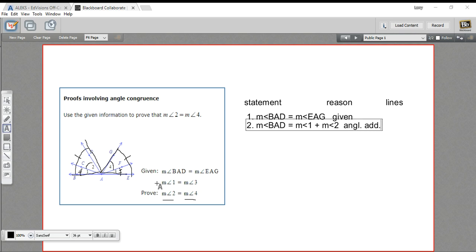All right, and we should do that for the other side as well. So the measure of ∠EAG is made up of the measure of angle 3 plus the measure of angle 4, and again that's just angle addition.